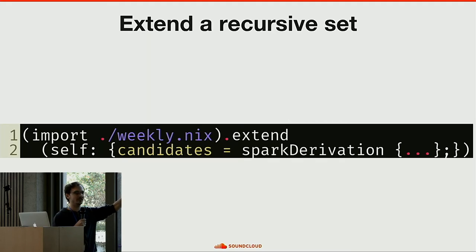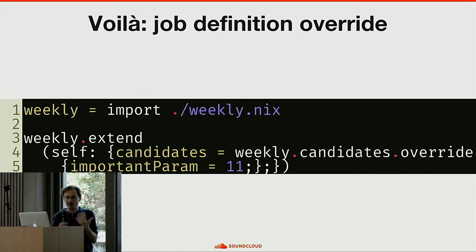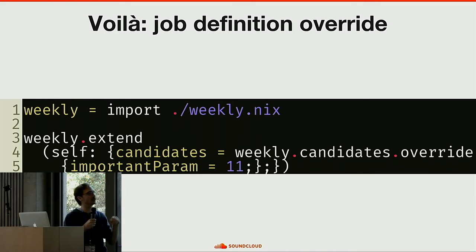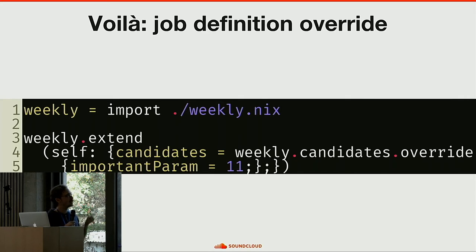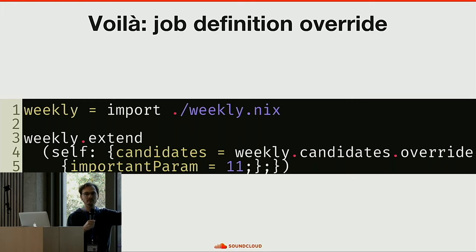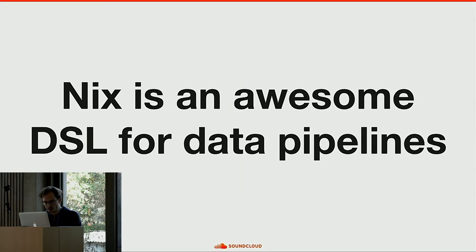With the pipeline represented as a fixed-point function, I define make extensible — also found in nixpkgs — which returns the fixed point of the set plus an extend function. This lets me modify the recursive set before applying the recursion, so anything recursively defined depending on a changed attribute will also be updated. Combining extend with overrides, I can take my production pipeline definition, change candidates' important parameter, and get the final result that depends on it. That is exactly what I wanted.